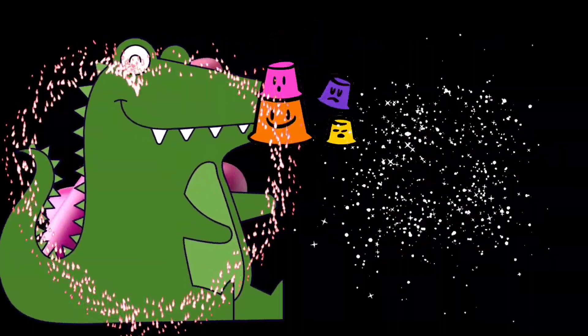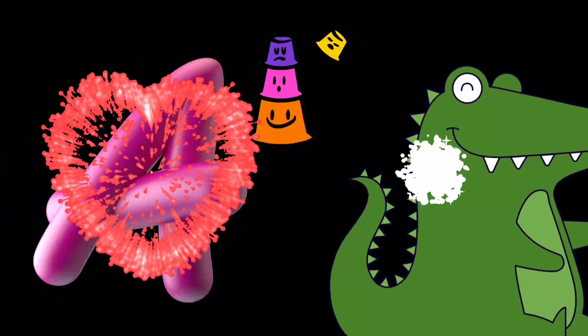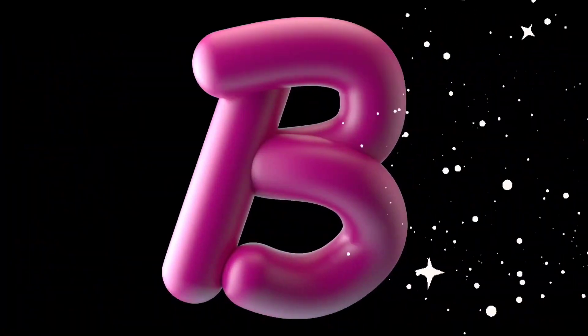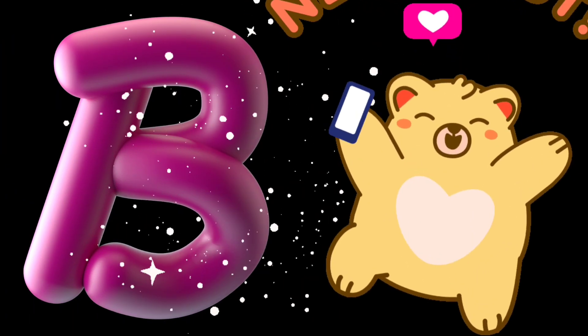Let's learn alphabets. A. A is for alligator. B. B is for bear.